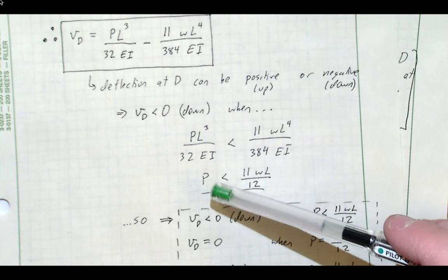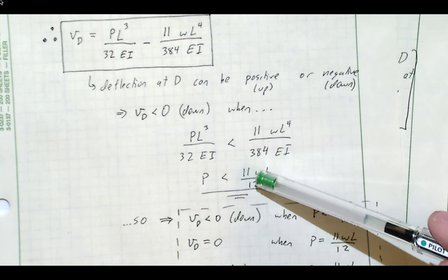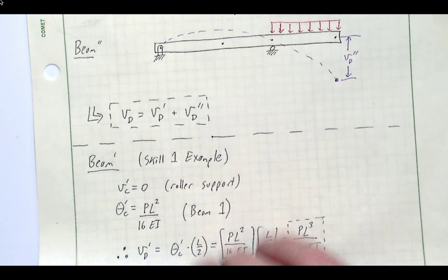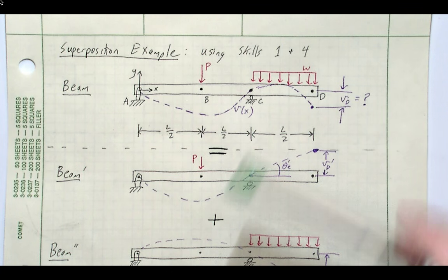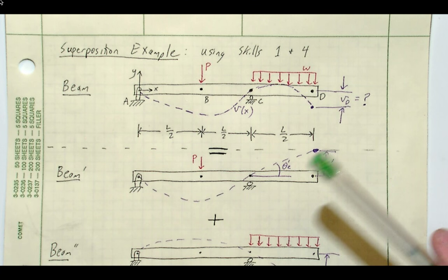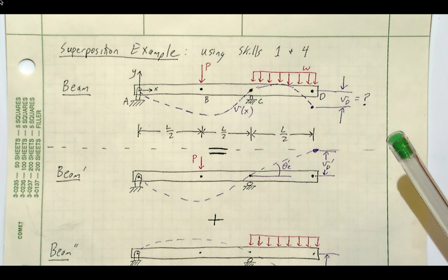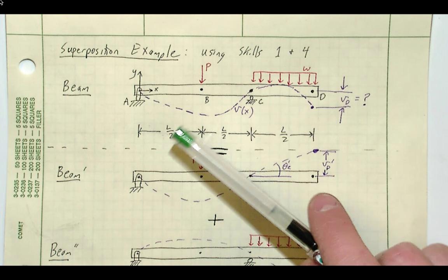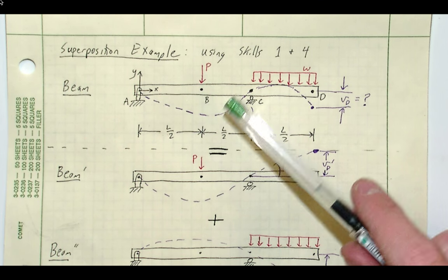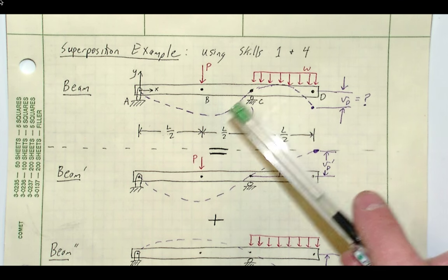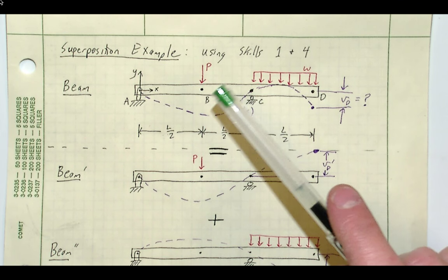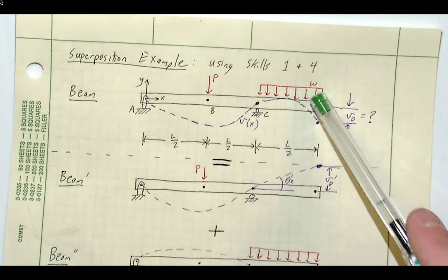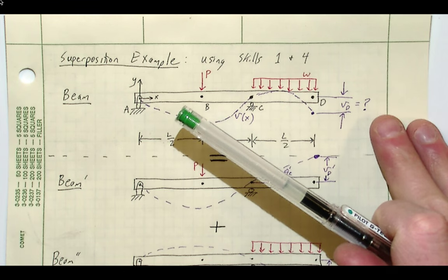When P is relatively weak compared to W, we expect a downward deflection at D — the picture drawn corresponds to this case. As P increases past the critical value of (11/12)wL, the deflection shifts upward. If they have exactly the right relationship — P = 11/12 times wL — the deflection returns directly back to zero at point D.